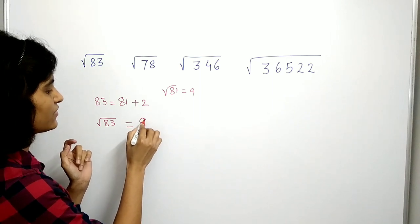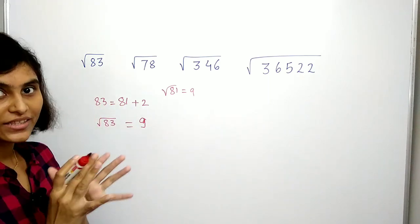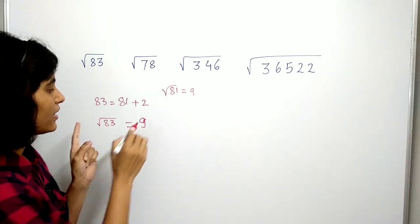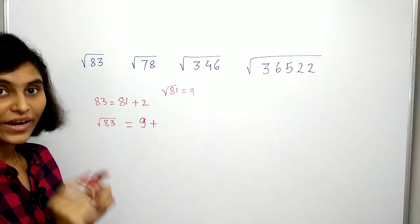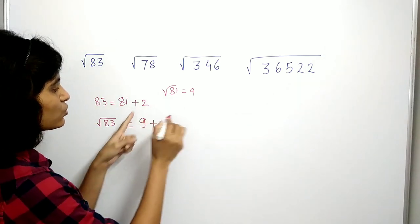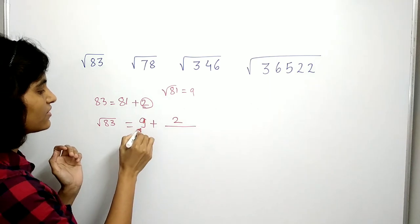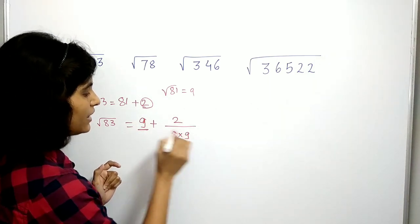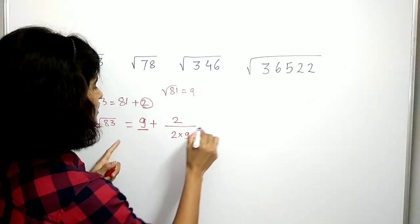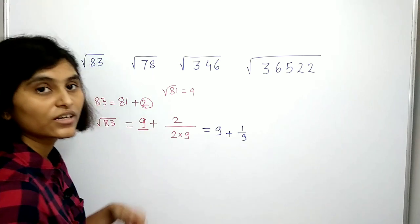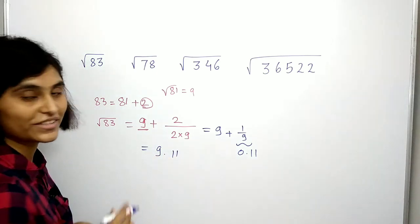We know that the square root of 81 is 9, so you write 9 here. Now 83 is in between 81 and 100, so 9 plus something must be the square root of 83. To find that something, you take the 2 as it is and divide it by 2 times 9. Simplifying, this is 9 plus 1/9, which is just equal to 0.11. So our answer is 9.11.